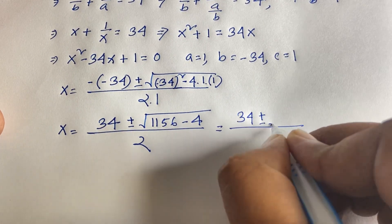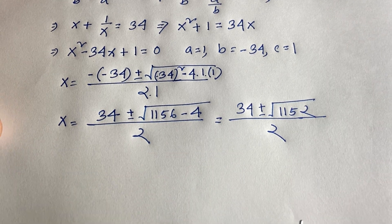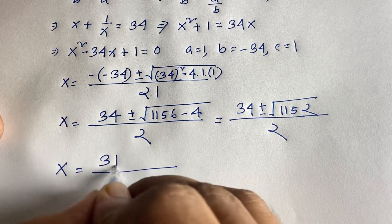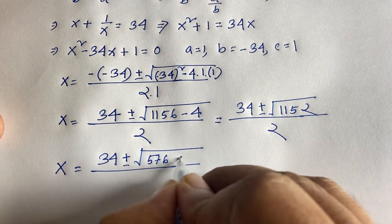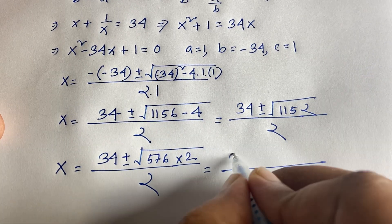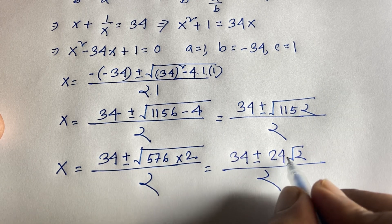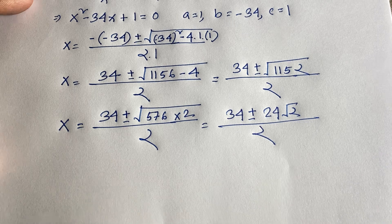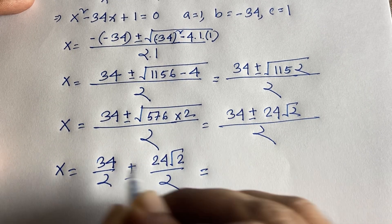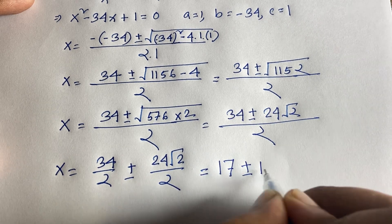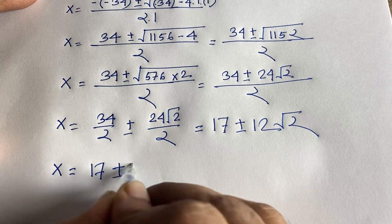Simplifying the discriminant: 1152 equals 576 times 2, so the square root of 1152 is 24√2. Therefore x equals (34 ± 24√2) over 2, which simplifies to 17 ± 12√2.